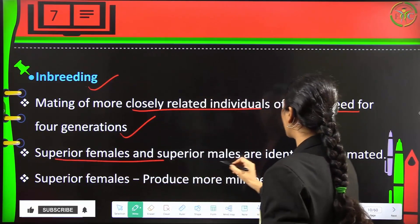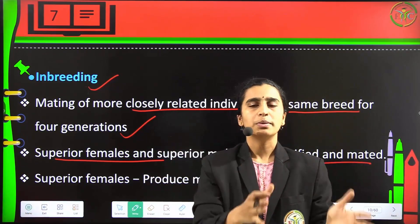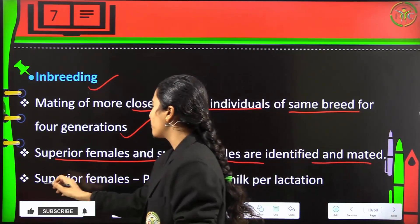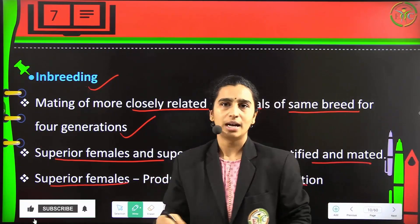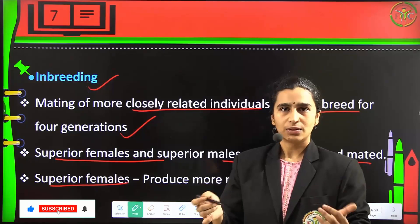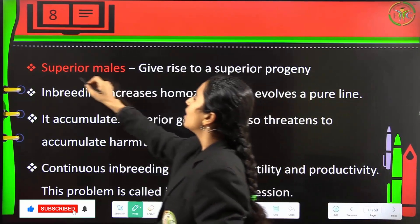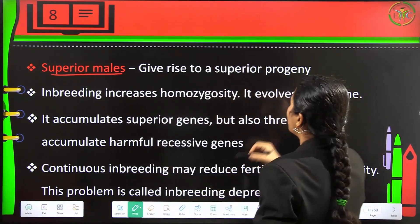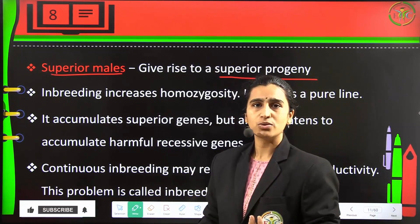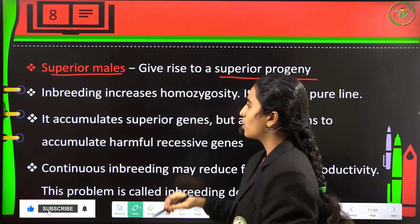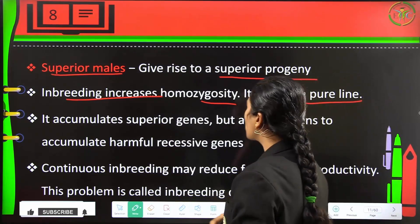In inbreeding, superior females and superior males are identified and mated. Superior females produce more milk per lactation, while superior males give rise to a superior progeny that can be used for field work. Inbreeding increases homozygosity and evolves a pure line. It accumulates superior genes but also threatens to accumulate harmful recessive genes.